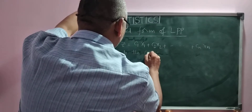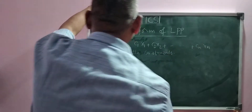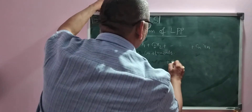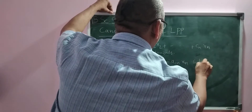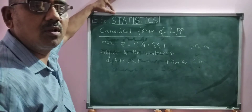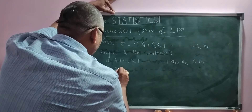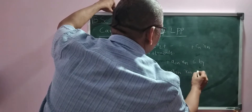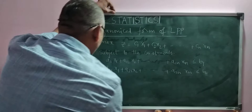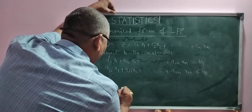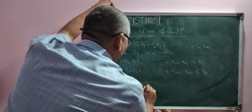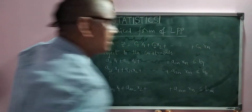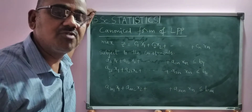Subject to the constraints: a11x1 + a12x2 + ... + a1nxn ≤ b1. The right-hand side constants are b1, b2, ..., bm. Then a21x1 + a22x2 + ... + a2nxn ≤ b2. And so on, up to am1x1 + am2x2 + ... + amnxn ≤ bm. These are m constraints in n decision variables x1, x2, ..., xn.